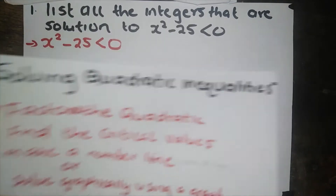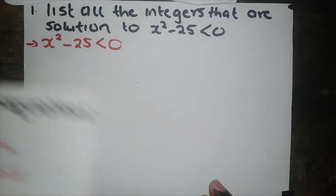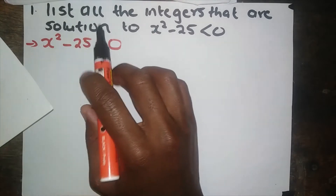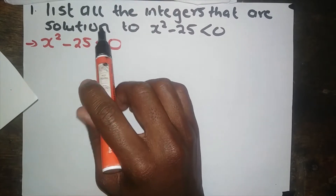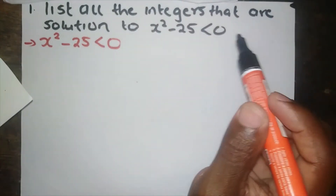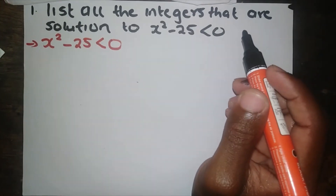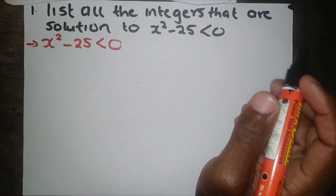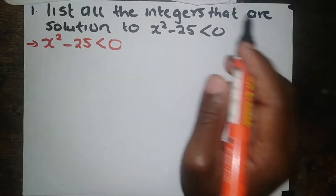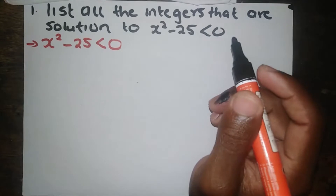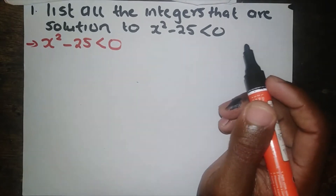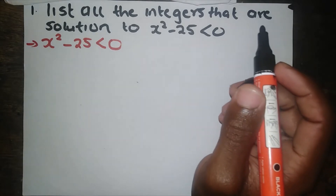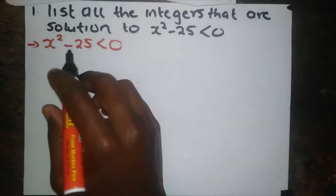Let's jump to the equation. This equation is extracted from the 2018 February/March exam paper, Question 1.2, if I'm not mistaken — you can download it and check. Here we are given an inequality which is x squared minus 25, which is less than 0.